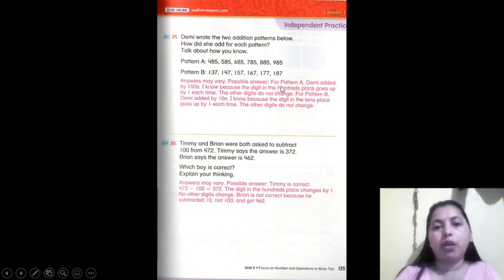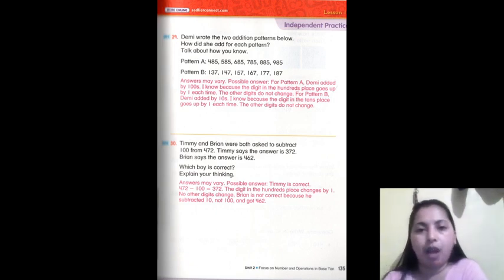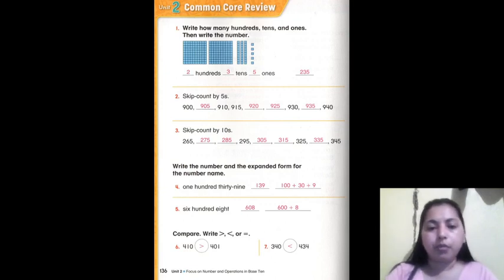Possible answer for Partner A: Demi added by 100. I know because the digit in the hundredths place goes up by one each time. The other digits do not change. For Partner B, Demi added by tens. I know because the digit in the tens place goes up by one each time. The other digits do not change. Problem 30 solve at your house after class.